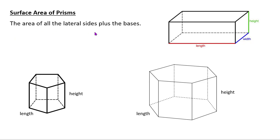Surface area of prisms: the area of all the lateral sides plus the bases. So lateral area, I'm going to be using the term lateral area. For the bases, I'm going to be using a big letter B. So we need to find the area of those bases. I have one, two bases. My surface area is my lateral area plus the area of two bases.